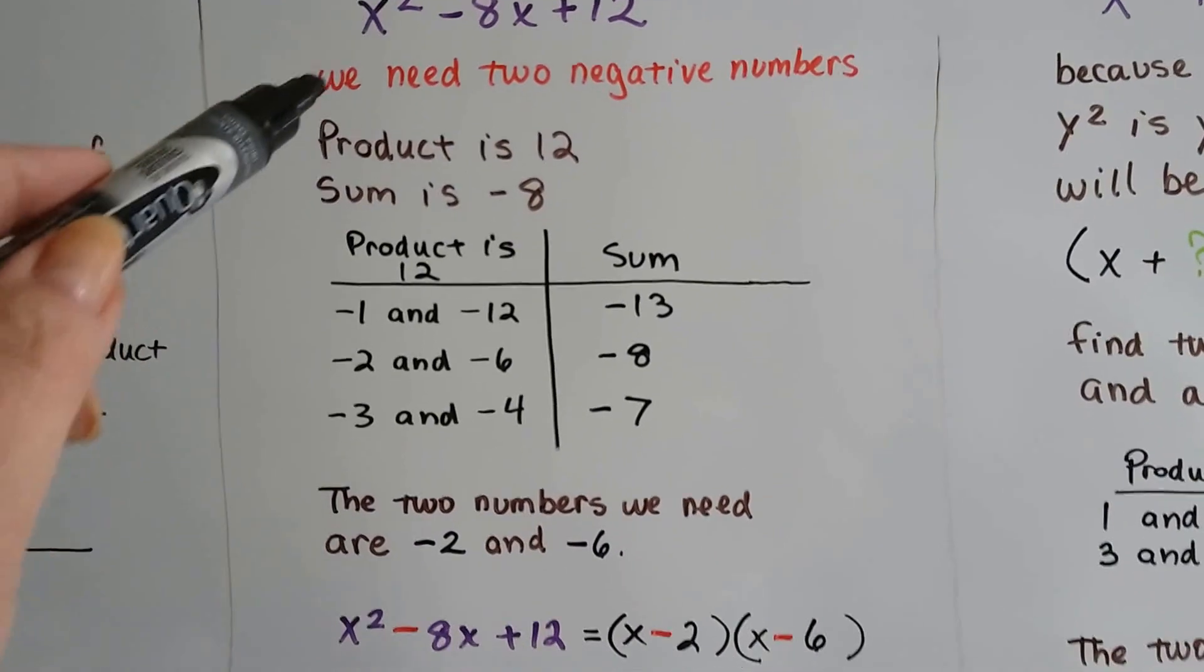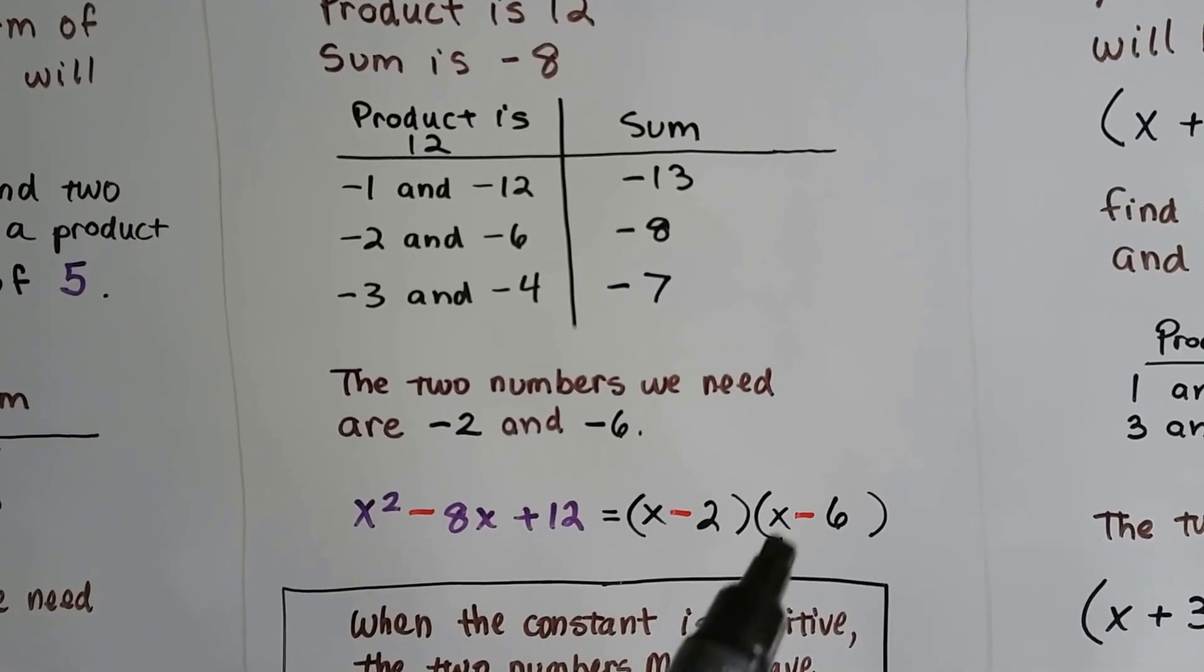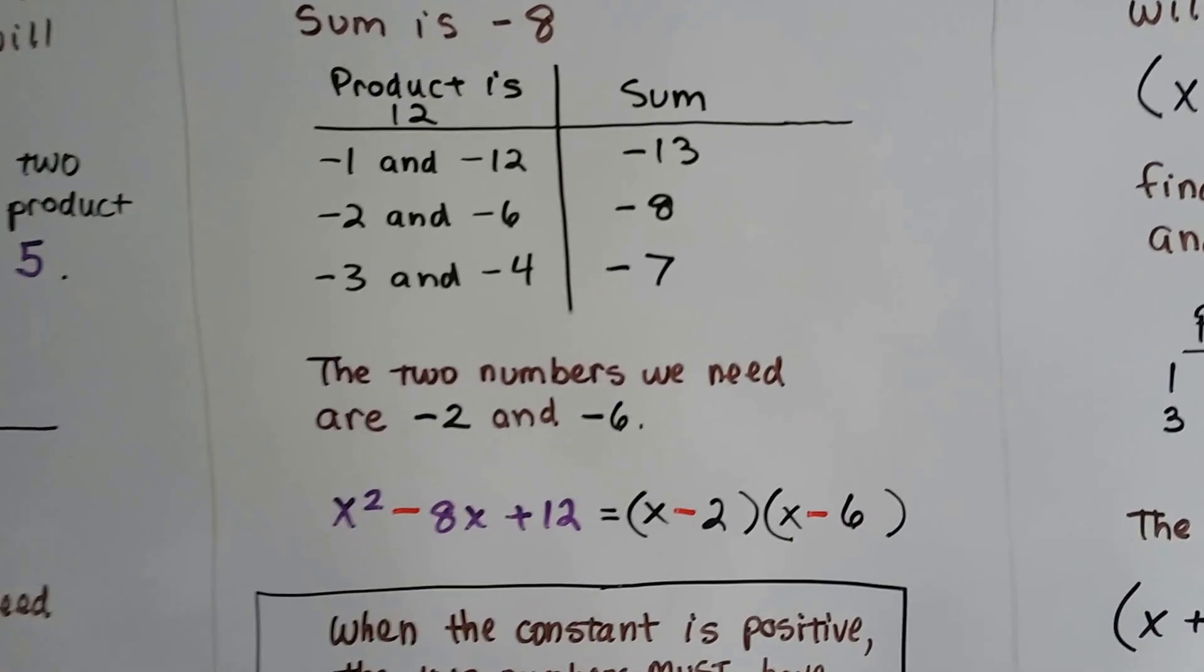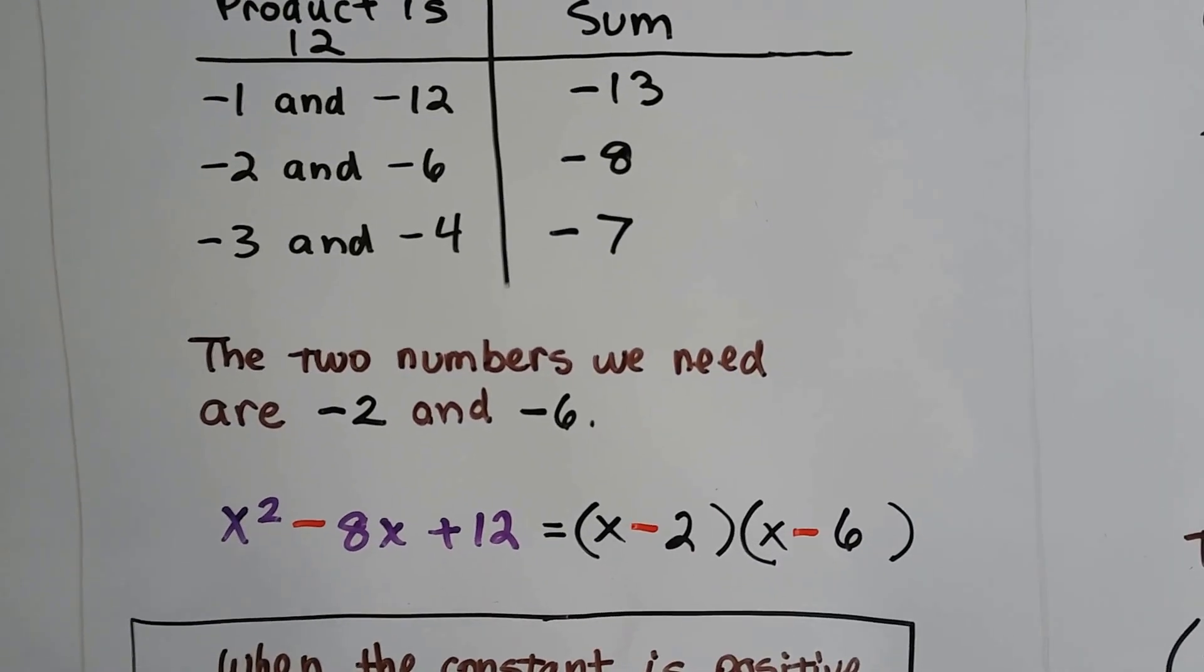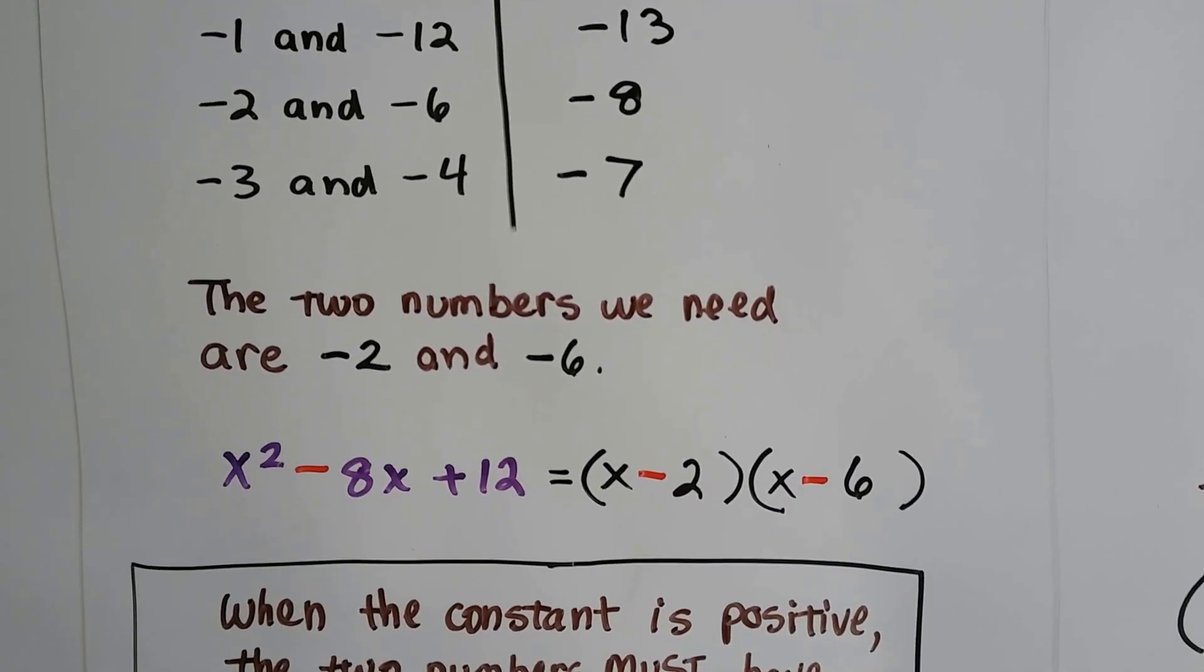And because it started with x², we know we can put an x in the beginning of each parentheses. And we put our two negative numbers. We've got x - 2 and x - 6 as our binomial factors.